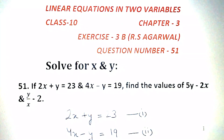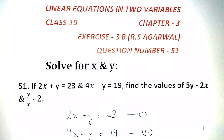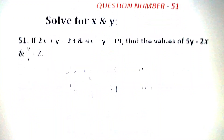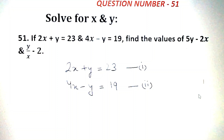If 2x plus y is equal to 23 and 4x minus y is equal to 19, then find the values of 5y minus 2x and y by x minus 2. We have equation 1 and 2, and we will solve by elimination method.